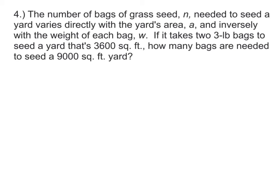This type of problem can get fairly complicated looking quickly. For example, the number of bags of grass seed needed to seed a yard varies directly with the yard's area and inversely with the weight of each bag. If it takes two 3-pound bags to seed a yard that's 3,600 square feet, how many bags are needed to seed a 9,000-square-foot yard? Well, going back to the beginning, we see that this is a type of joint variation because all of our variables are going to be related in a couple different ways.